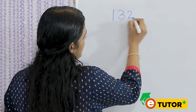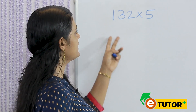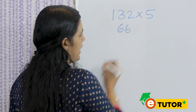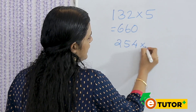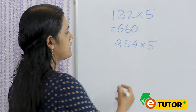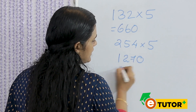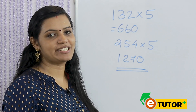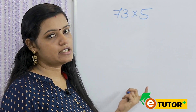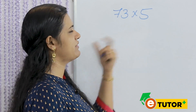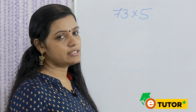We have 2-digit numbers here. We multiply with 5: for example, 32 multiplied by 5. We also multiply 60 by 5. Here we multiply with 60. If you try with 60, we get 300. Then try with 80 multiplied by 5. We have to multiply in the same way — for example, 73.